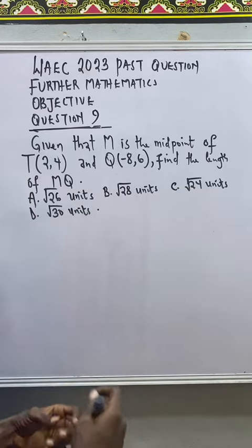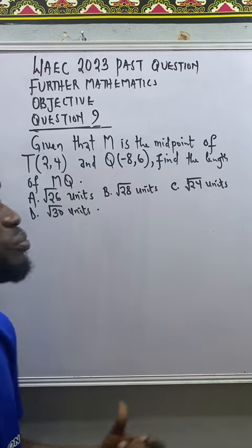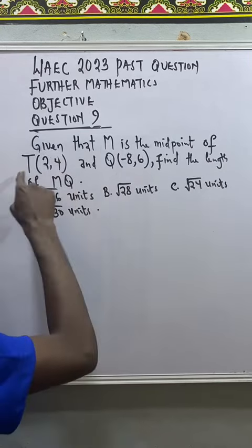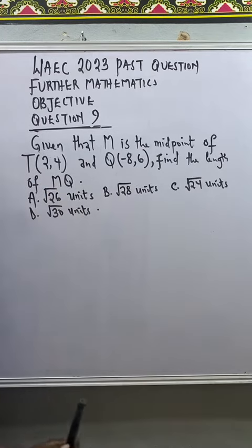But in order not to waste time, that may be too long, we can use a simple method by finding the distance between T and Q, then take the half. Now to find the distance MQ.